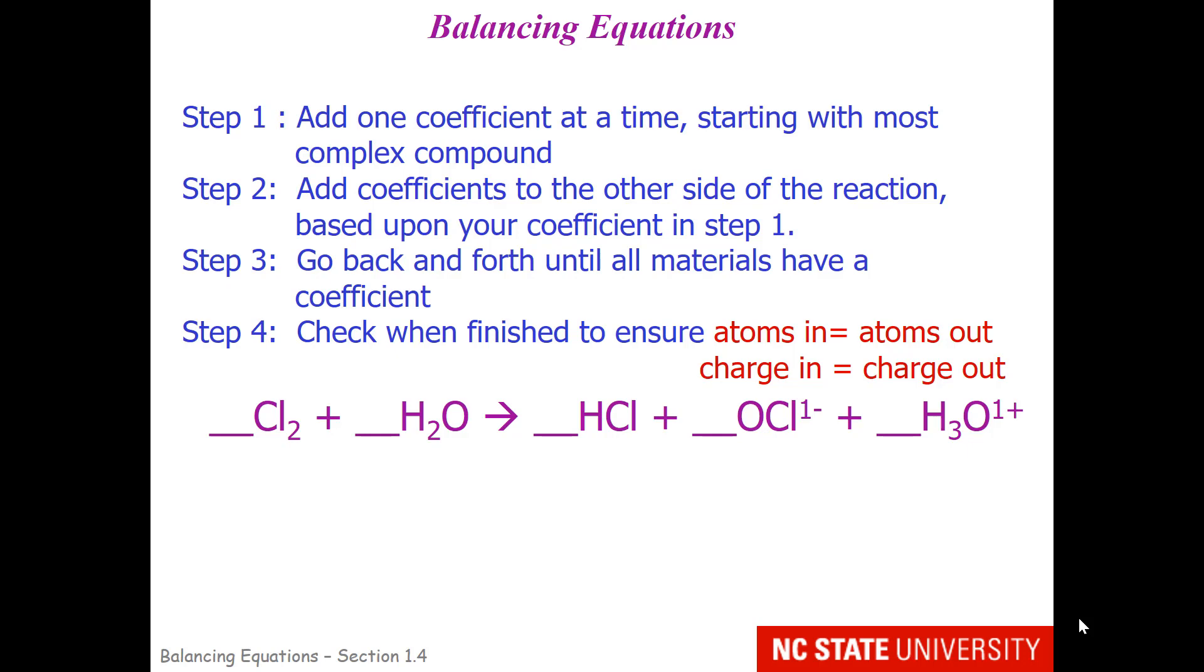What is recommended is we add one coefficient at a time and it's typically best to start with the most complex compound, that means the one with the most number of atoms. Then you go back and forth from reactant to product side based upon your coefficient that you chose in step one. When you're done, make sure that atoms in equals atoms out and charge in equals charge out.